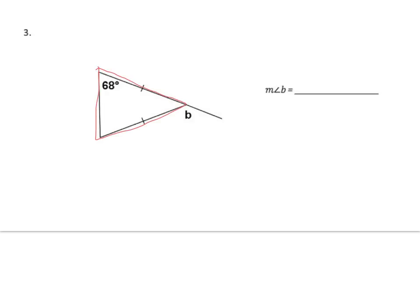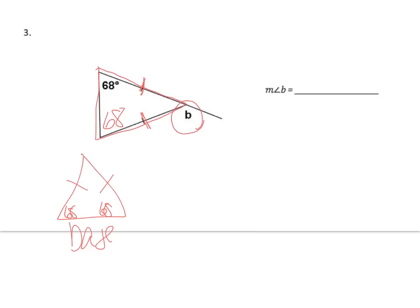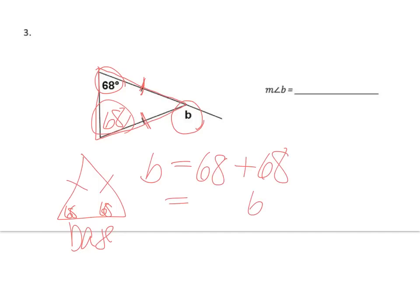This is an isosceles triangle, so we know the base angles are the same. We know it's isosceles because the two sides have tick marks on them. Both base angles are 68 degrees. The exterior angle of a triangle equals the sum of the two opposite interior angles, so b equals 68 plus 68, which is 136 degrees.